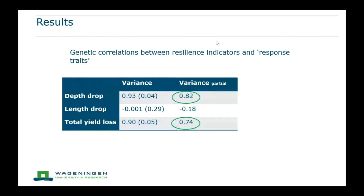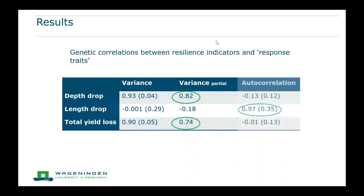Variance was not really related with the length of the drop, which reflects recovery time. However, when we look at autocorrelation, we see a very strong correlation — not with drop depth or total yield loss, but with recovery time. This is also really nice because it shows that autocorrelation covers the other aspect of resilience: recovery time.